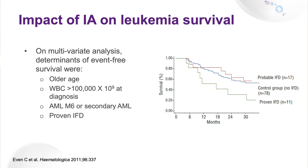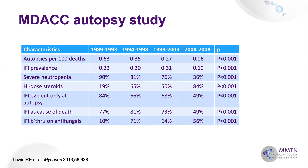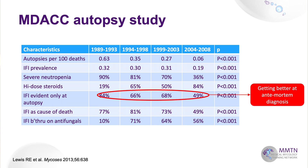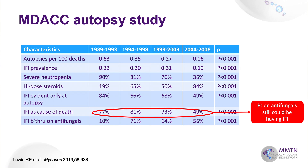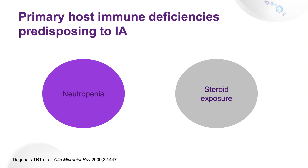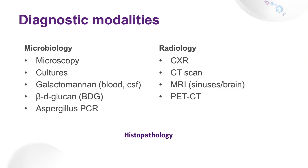Over the years, we have become better at diagnosing aspergillosis. This MD Anderson review of autopsies from the 1990s to 2008 shows that IFIs are nowadays less commonly found at autopsies. For those IFIs that become evident only at autopsy, it used to be 84% last century, but it's only 49% nowadays. It is becoming less frequent as a cause of death, though there are more IFIs seen as antifungal breakthroughs. Neutropenia and steroids remain the two biggest immune deficiencies predisposing to IA.